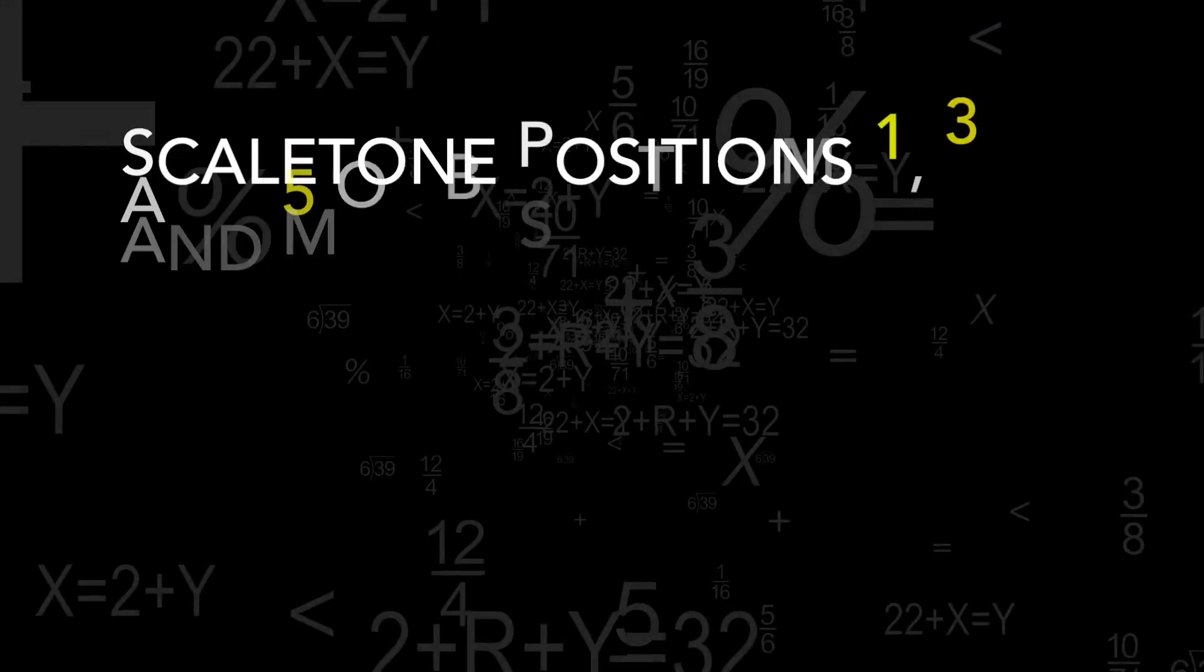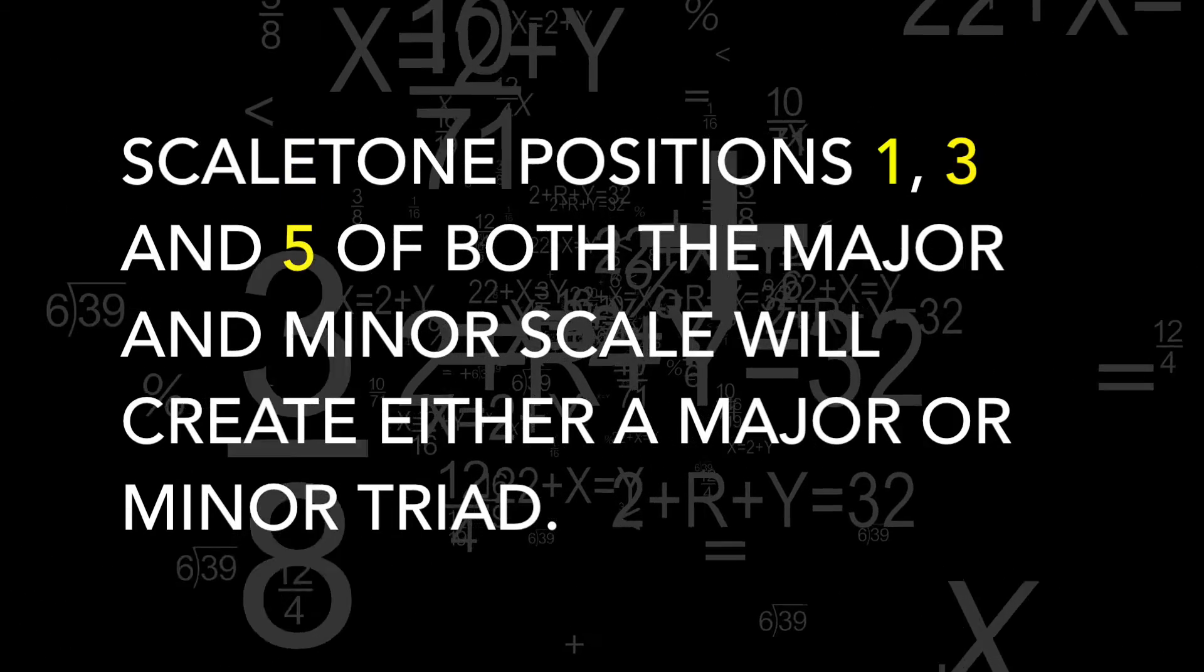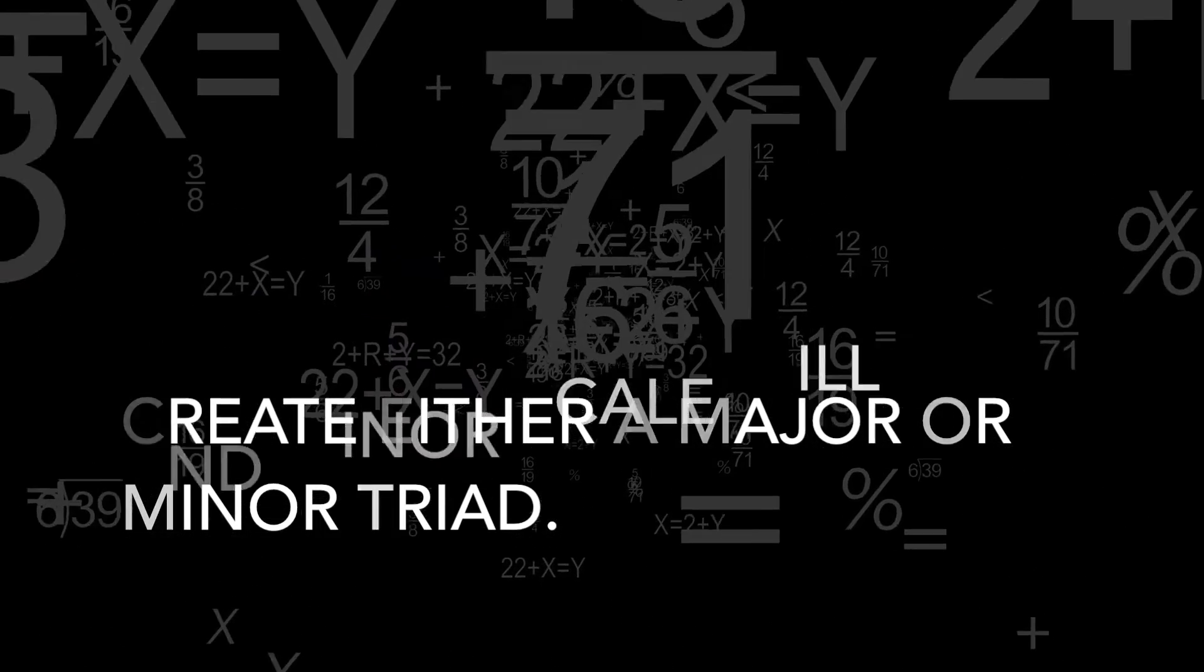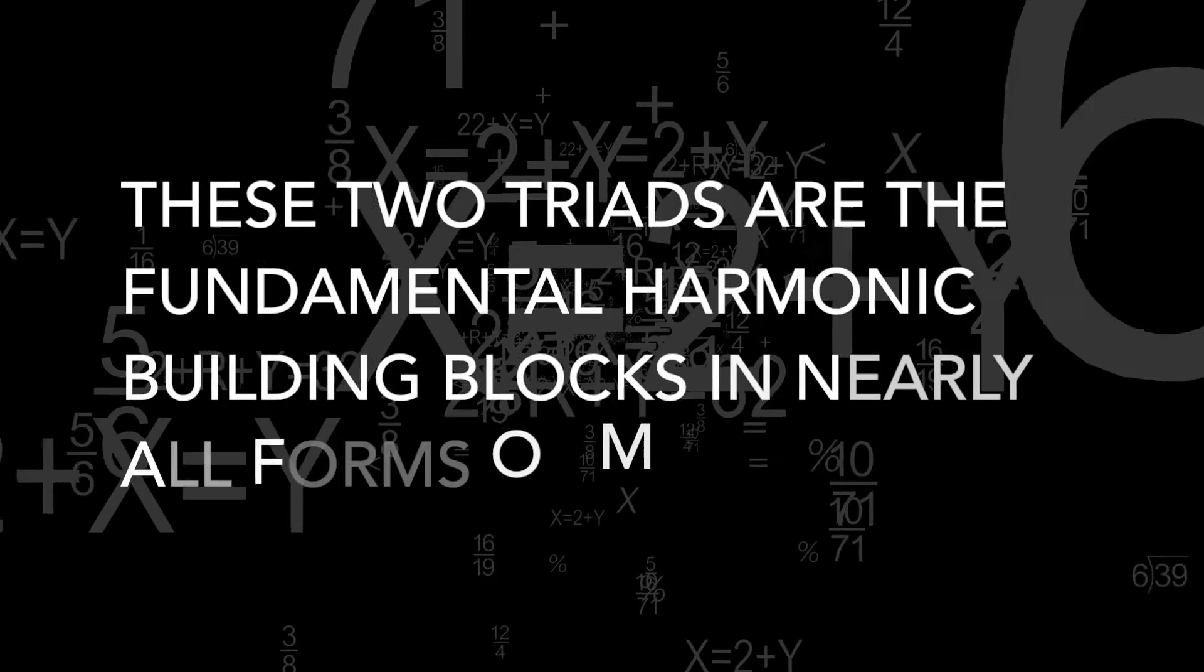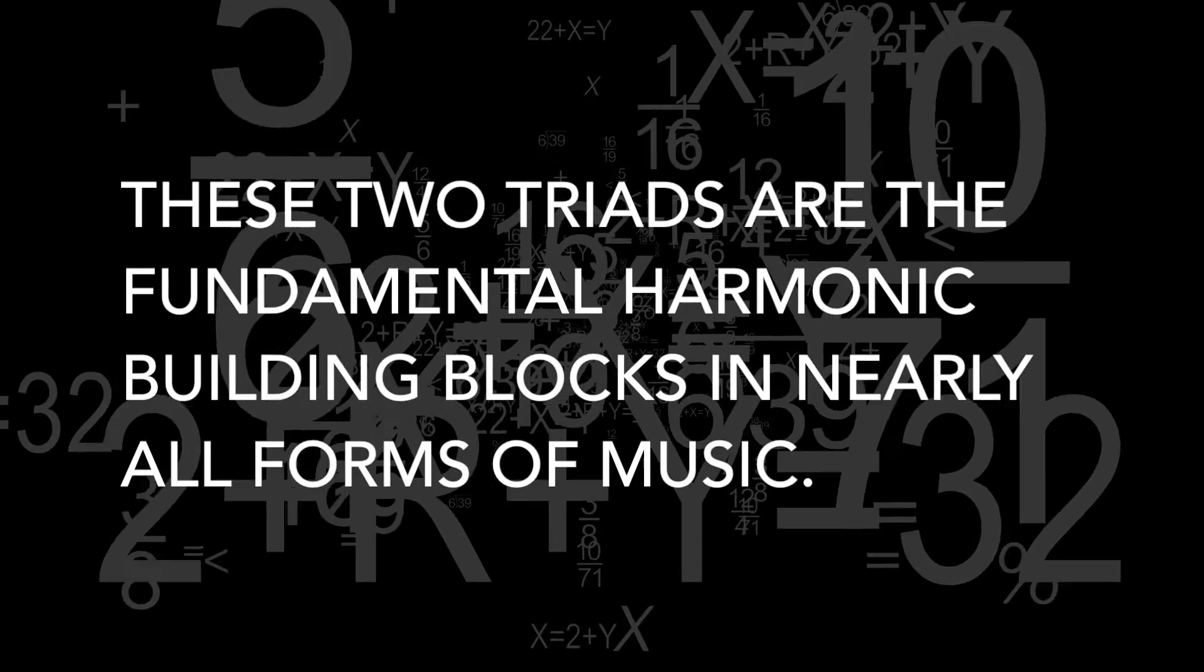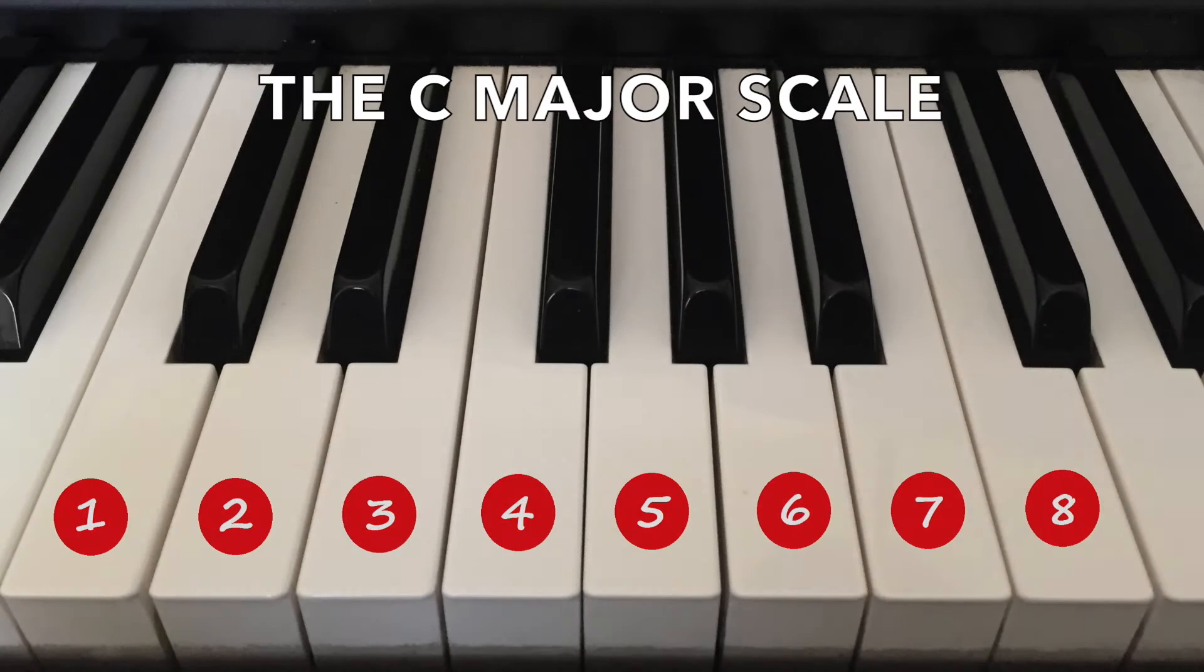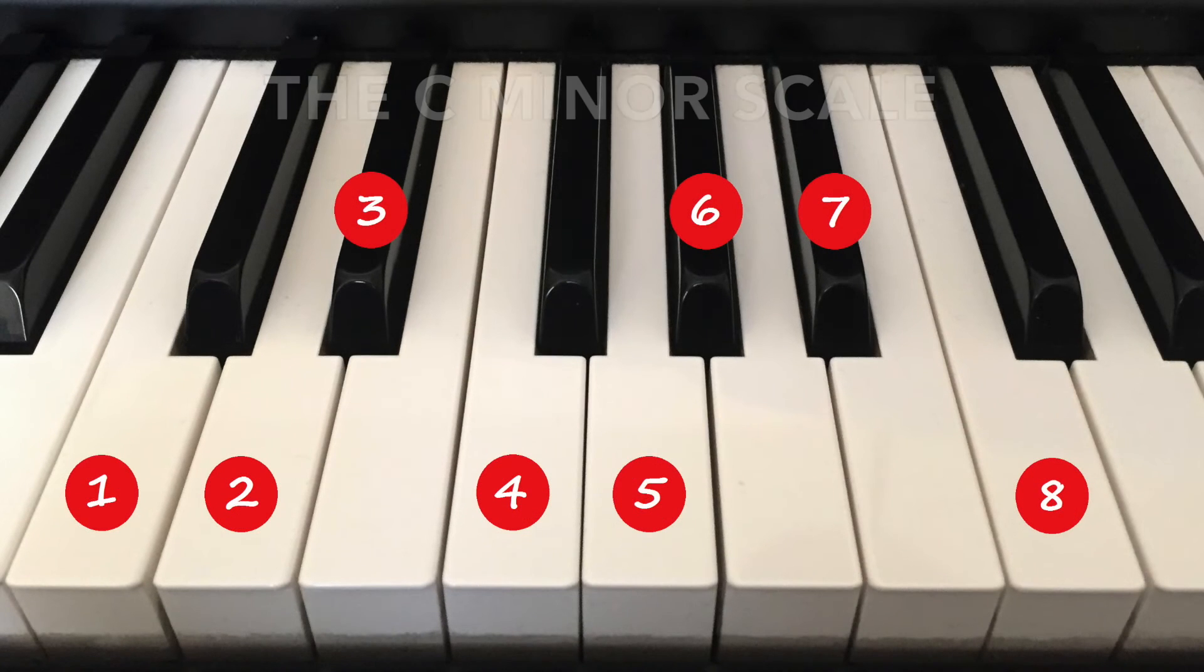Out of all of those scale tone positions, numbers one, three, and five of both the major and minor scale will create either a major or minor triad. These two triads are the fundamental harmonic building blocks in nearly all forms of music. As most popular chords are derived from particular scales, one really needs to know the scale tones first, as with this C major scale, or this C minor scale.